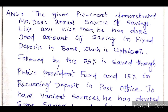'The given pie chart demonstrates Mr. Das's annual sources of saving.' 'Demonstrated' means to show or display. This chart shows us how Mr. Das, like a wise man, saves a good amount: 'Like any wise man, he has done a good amount of saving in fixed deposit in the bank, which is up to 45 percent, followed by 25 percent saved through Public Provident Fund, and 15 percent in Recurring Deposit in Post Office.'